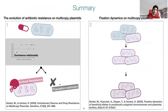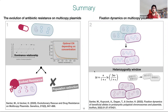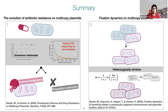In summary: for the first part, the dominance relationship plays a crucial role in the evolution of antibiotic resistance of multicopy plasmids, and the optimal copy number often depends on the antibiotic concentration, which shapes the dominance relationship. For the second part, we see a rise of heterozygous cells causing a heterozygosity window, and the segregation mode of the plasmid is crucial for the fixation dynamics.